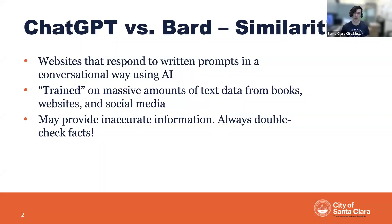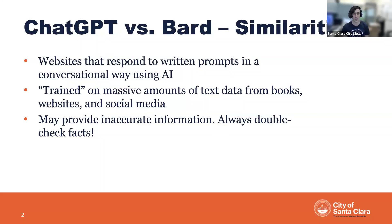These models have been trained on massive amounts of text data from books, websites, social media, and all different places. Essentially, it's a computer program that looked at all of this text and figured out how English works and how information is organized, and it uses this to answer your questions. It's not perfect, however — it can produce inaccurate information. So when you're asking it for facts, it's always important to double-check using a separate source to make sure it's giving you something correct.